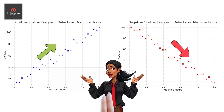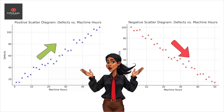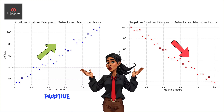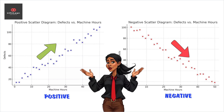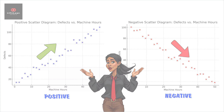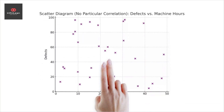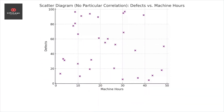Conversely, if the pattern moves downward, it's a negative correlation, where one variable increases and the other decreases. If the points are scattered without any particular pattern, it might suggest no correlation.